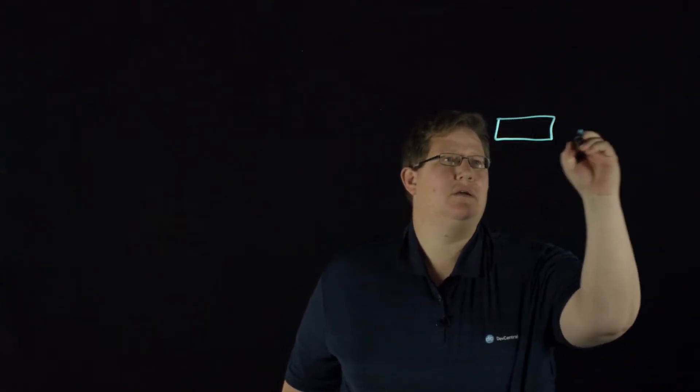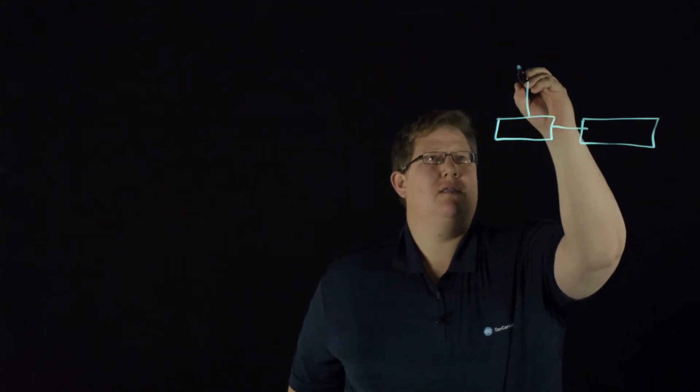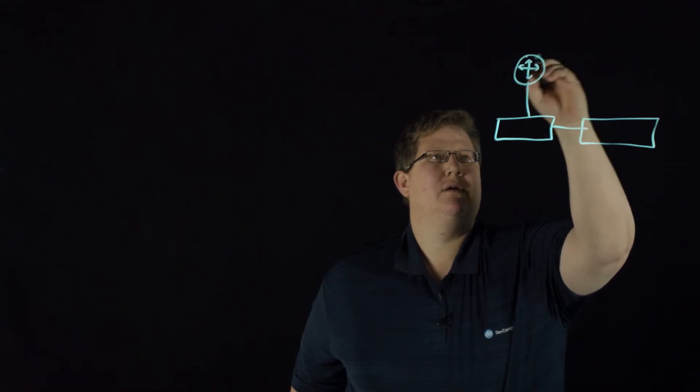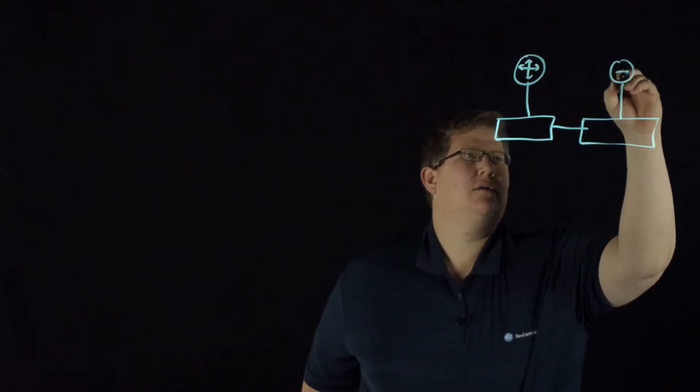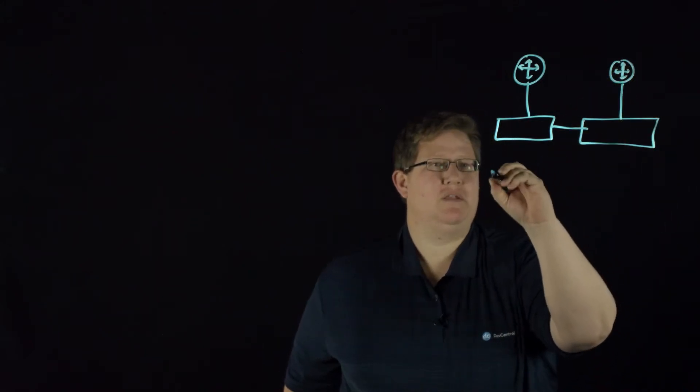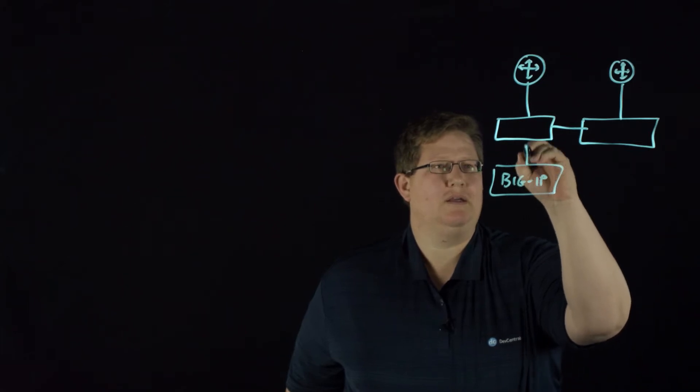So what MAC Masquerade allows you to do is if you have a switch here, and these are connected, and then maybe you have a router pair that are connected going out to whatever they're doing, and then you have your BIG-IPs connecting into these switches.